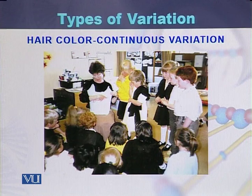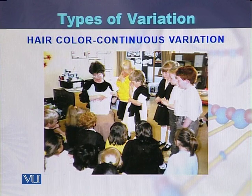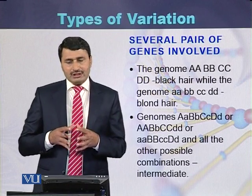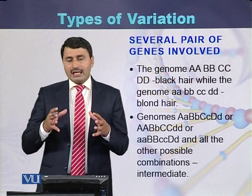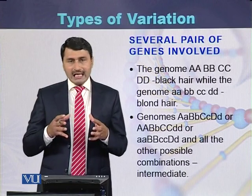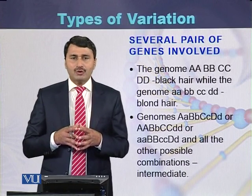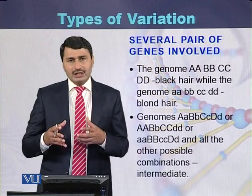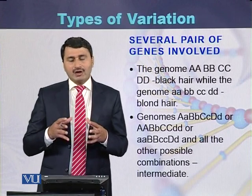We can see different children with different hair colors — some have red, some have black, and some have curly hair — with many intermediates between black and brown. In the case of continuous variation, multiple genes control the trait. For example, human hair color is controlled by four different genes.